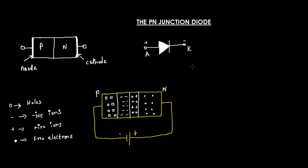So what is actually reverse bias? Reverse bias means that the positive terminal of the battery is connected to the N-type and the negative terminal of the battery is connected to the P-type. The anode is always the P-type and the cathode is the N-type.